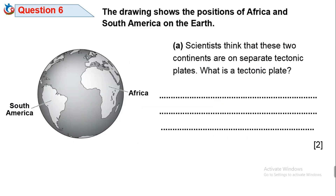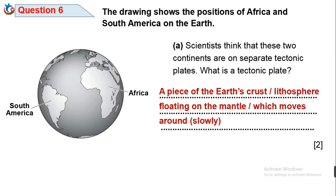Question 6. A drawing shows the positions of Africa and South America on the Earth. Scientists think that these two continents are on separate tectonic plates. A tectonic plate is a piece of the Earth's crust or lithosphere floating on the mantle that can move around slowly. They are landforms created as a result of Earth's movement.